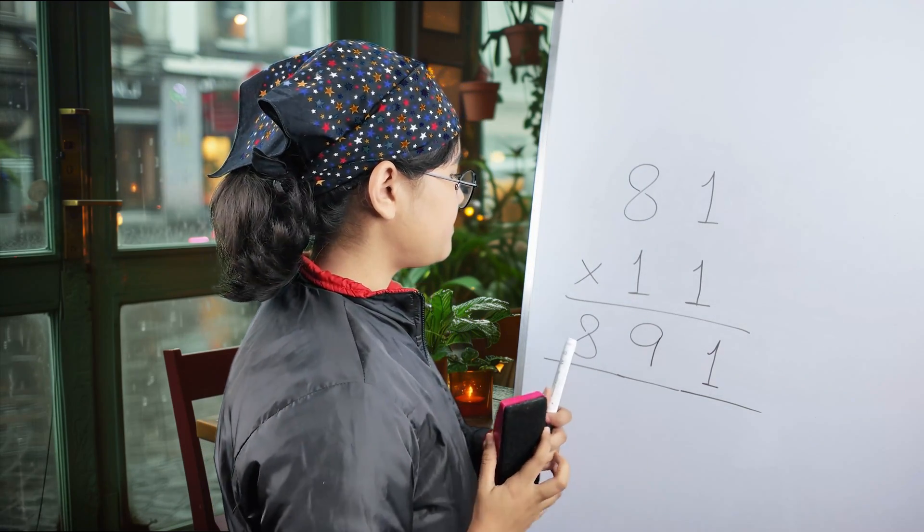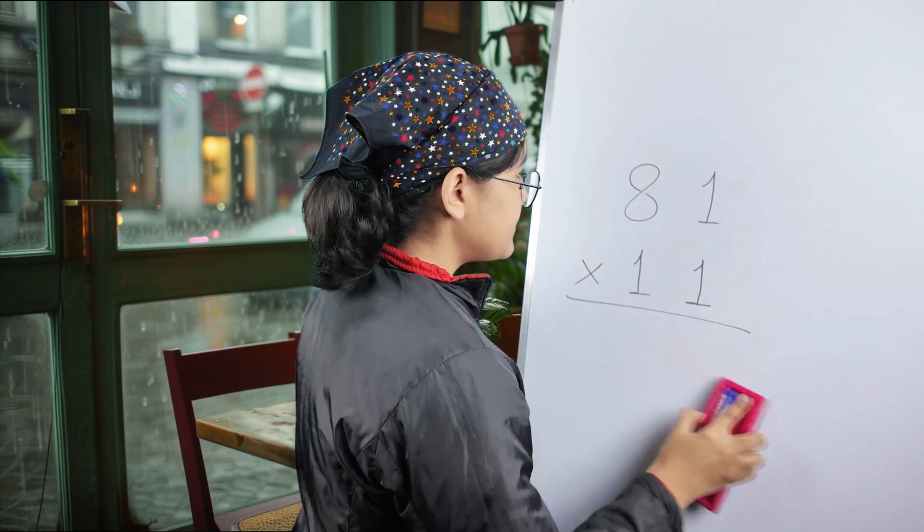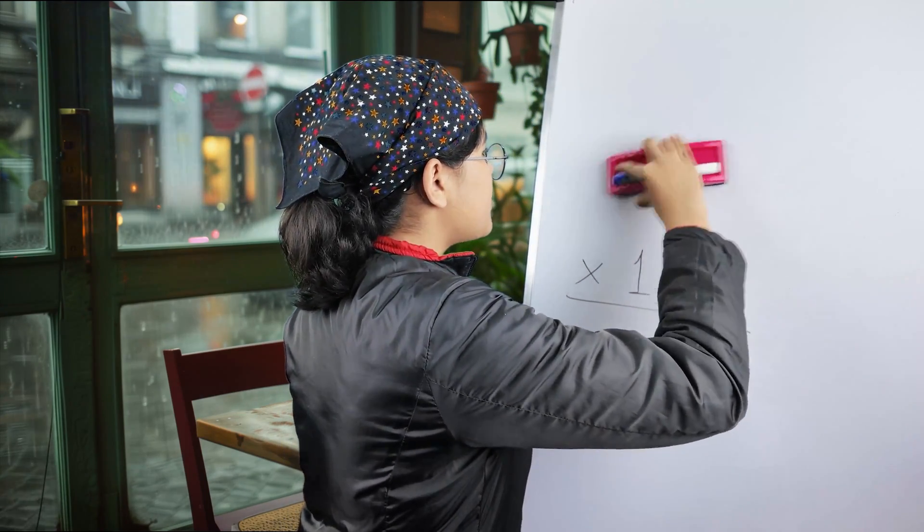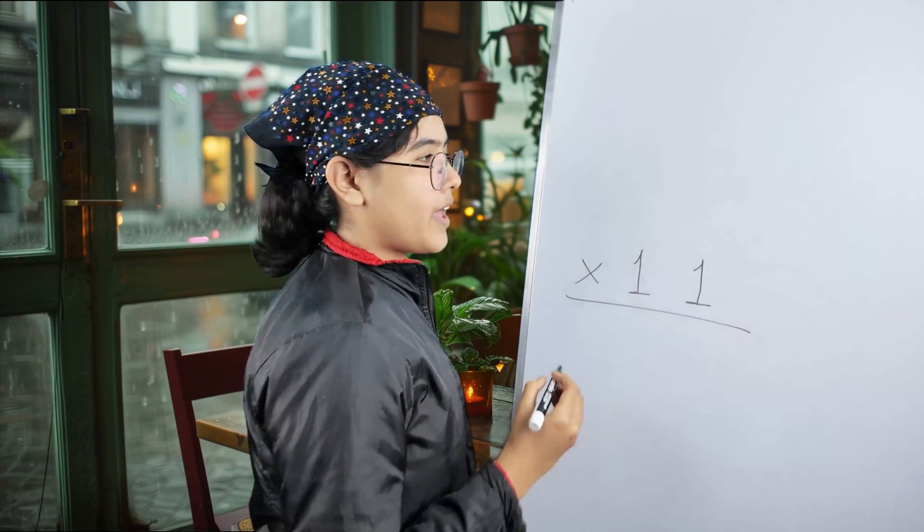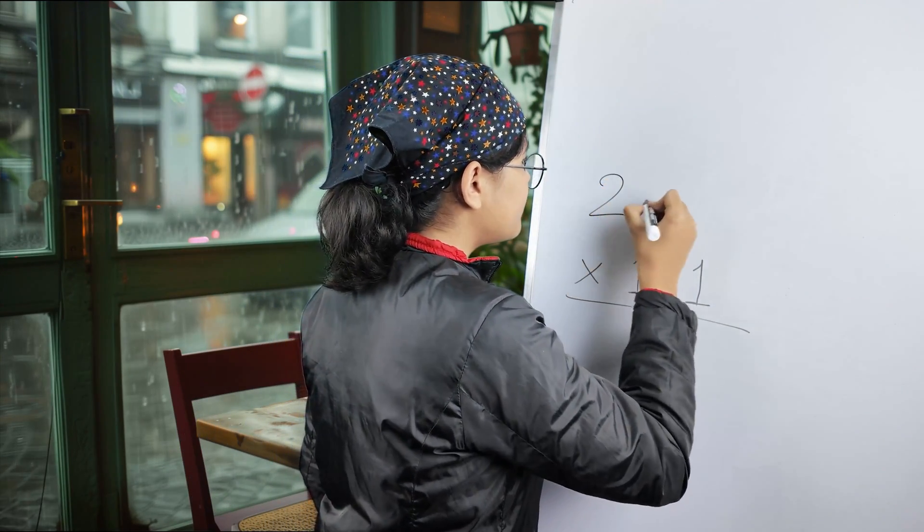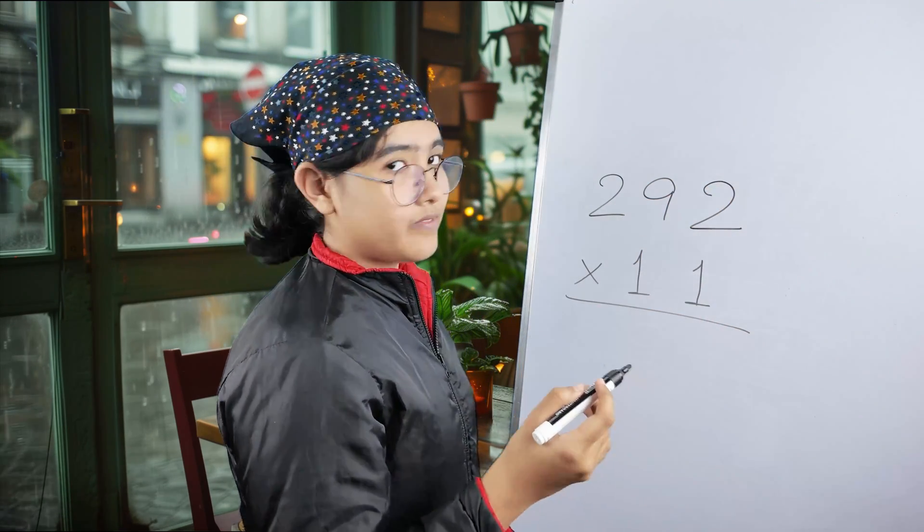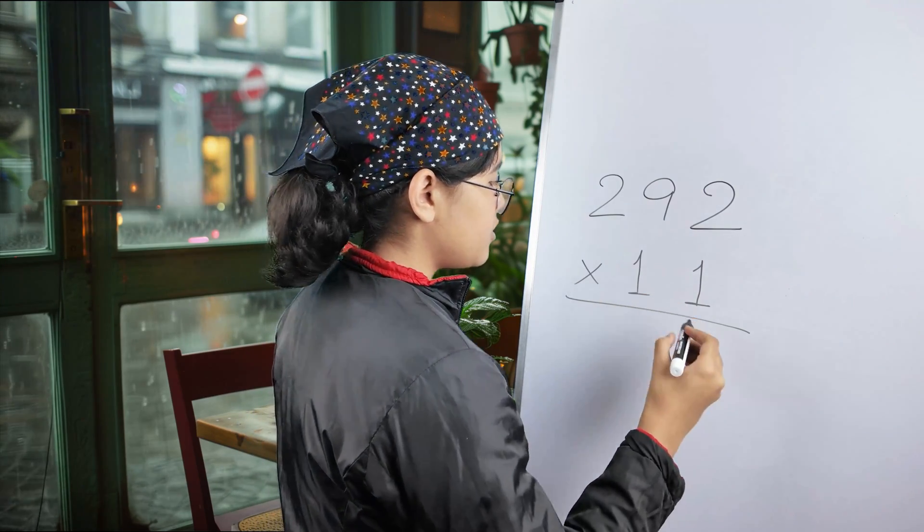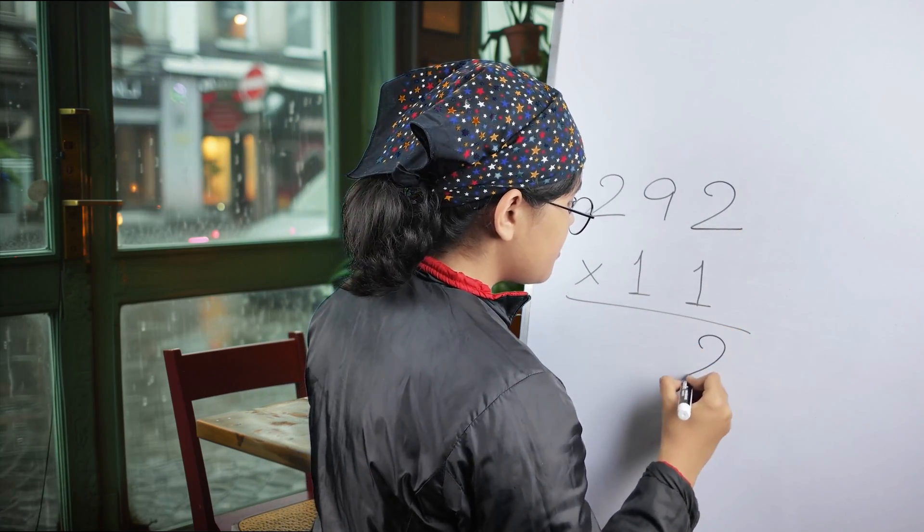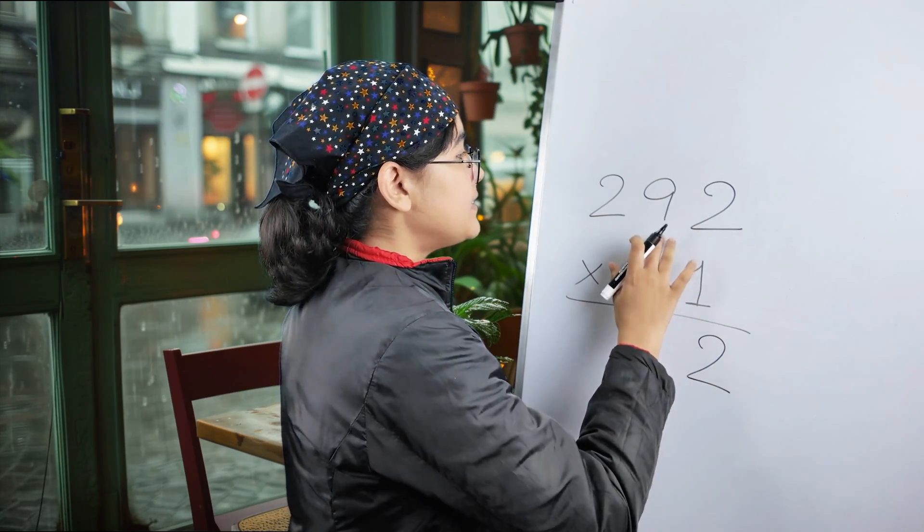Next one. We'll take a three-digit number this time and dive into the actual video part. This one: 292. Next number. So we'll, as usual, take this 2 down, but not this one. Hold on, I'll tell you why.